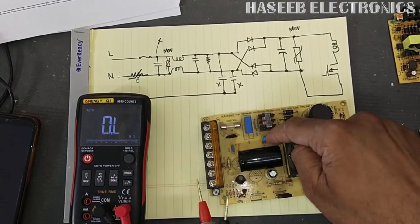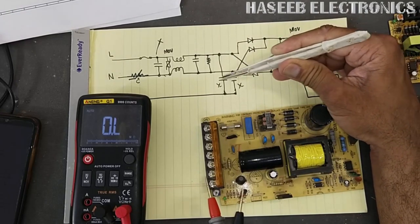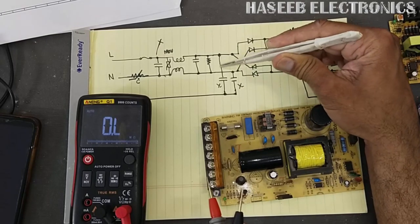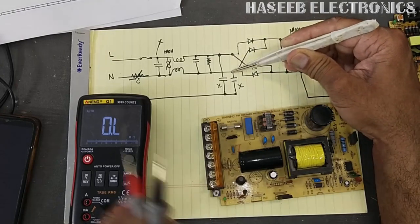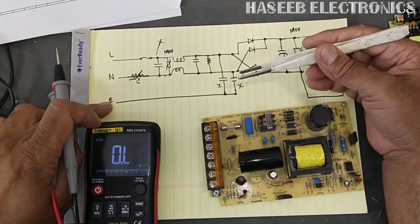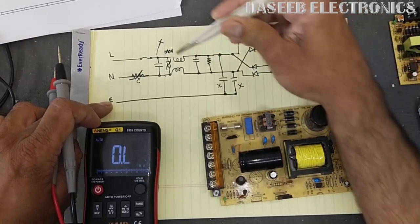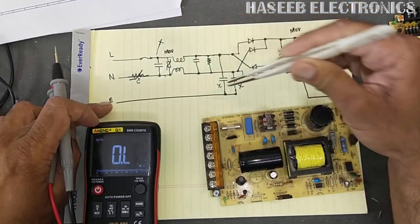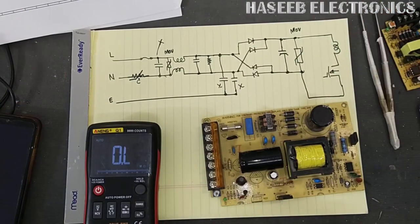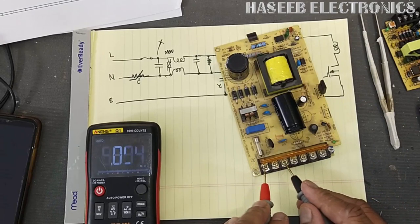Sometimes both Y capacitors make a problem. If both become short circuit they will give an easy path from high to low line. In some cases one capacitor is damaged — if we connect the earth ground to the supply and one Y capacitor is damaged, the line voltage will go into the chassis and ground, causing the fuse to blow. So we need to check resistance between line, neutral, and ground.